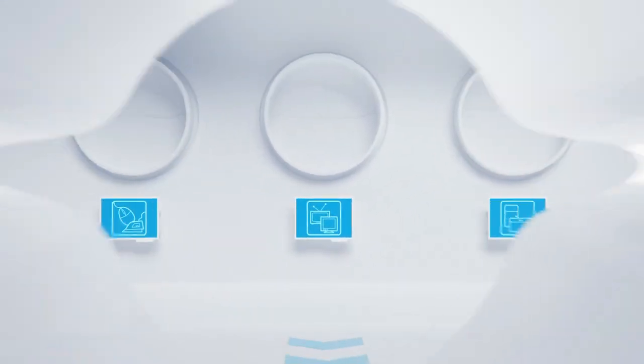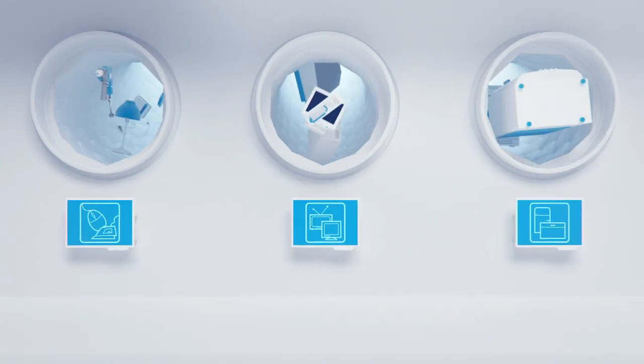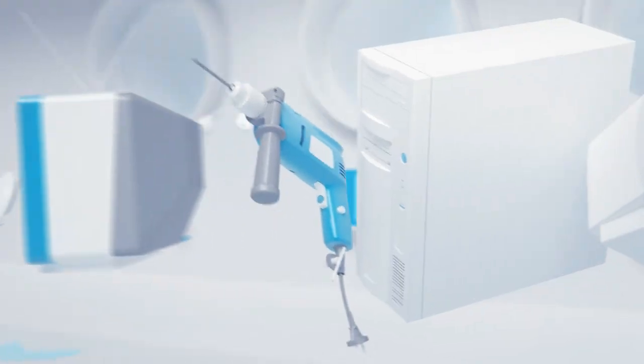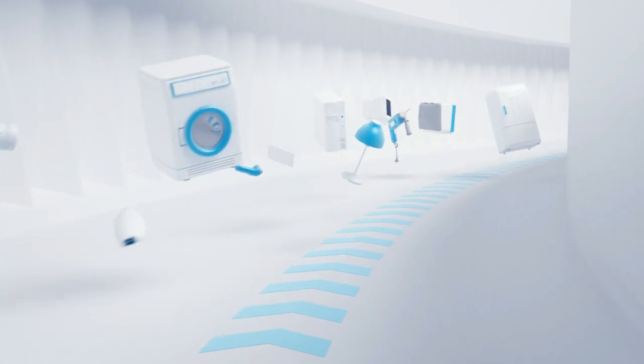Recupel collects appliances such as fridges, computers, televisions, mobile phones, washing machines and drills from electrical goods shops, reuse centers and container parks.